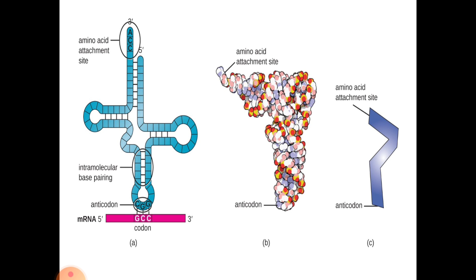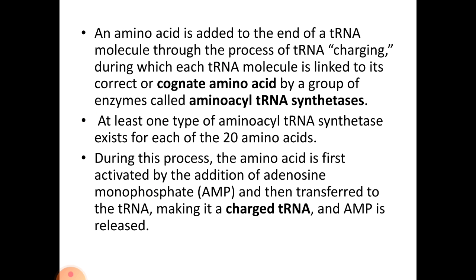An amino acid is added to the end of the tRNA molecule through the process of tRNA charging, during which each tRNA molecule is linked to its correct, or cognate, amino acid by a group of enzymes called aminoacyl-tRNA synthetases. At least one type of aminoacyl-tRNA synthetase exists for each of the 20 amino acids. During this process, the amino acid is first activated by the addition of adenosine monophosphate (AMP) and then transferred to the tRNA, making it a charged tRNA, and AMP is released.